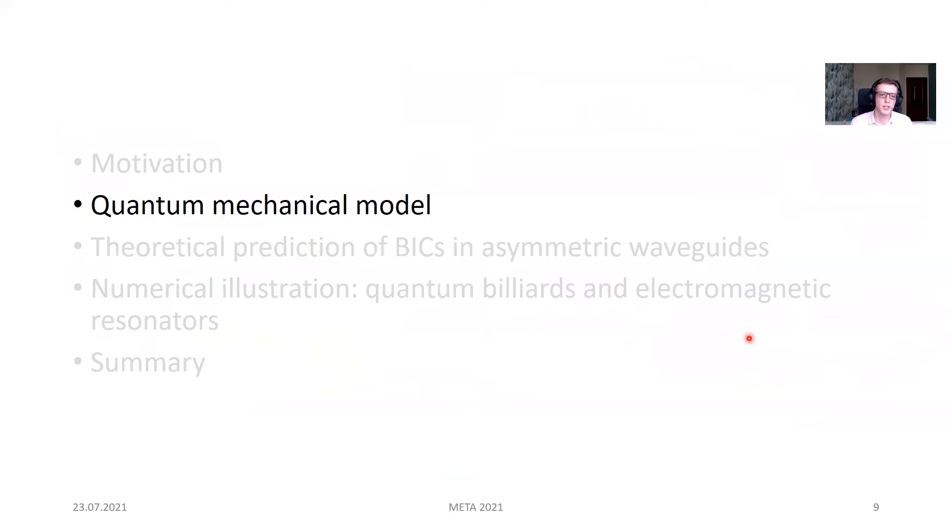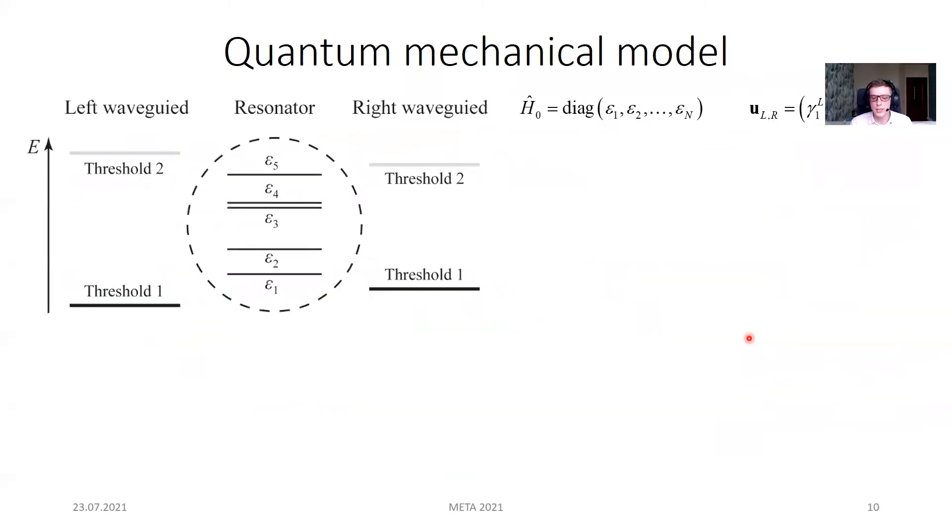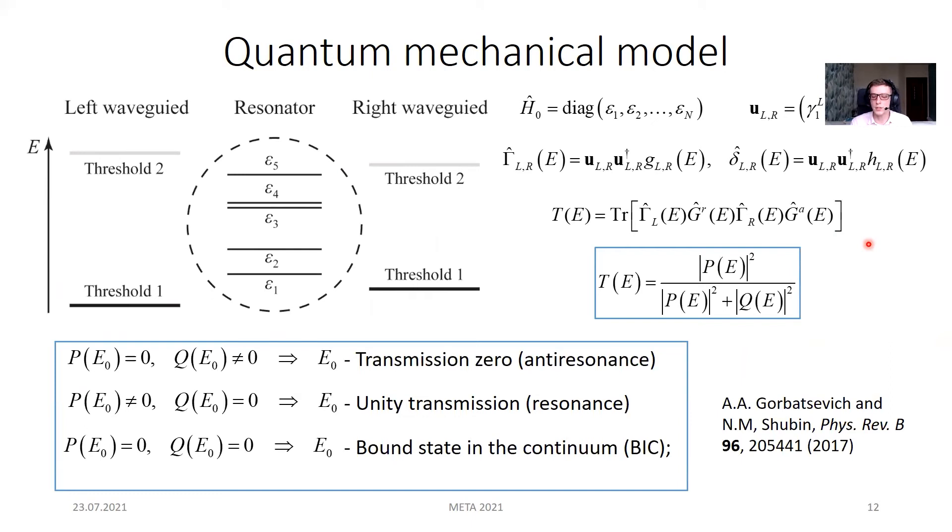I begin with the general quantum mechanical model. We consider an electron resonator coupled to two electron waveguides, which we refer to as left and right. We assume that each waveguide has only one propagating mode within the energy range of interest. The coherent scattering problem can be solved within the formalism of non-equilibrium Green's function. For this reason, we introduce waveguide self-energies and then apply the Landauer formula for transmission coefficient.